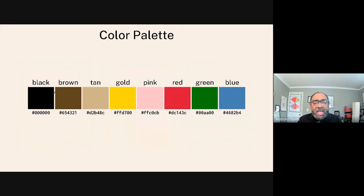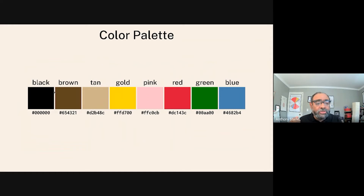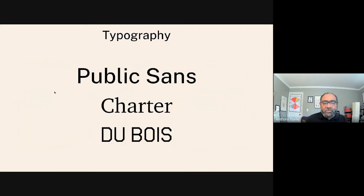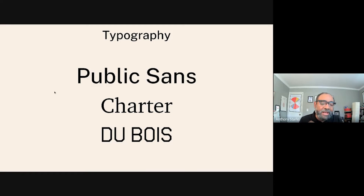In doing the recreations, I found that there was a well-defined color palette. You see the black, the brown, and the tan, which Du Bois used to denote things like skin color. But also the black, the red, and the green, which presaged the Pan-African flag, which was created in 1920. Typography was also interesting. I used Public Sans and Charter. There has also been a typeface called Du Bois created by Trey Seals from VocalType, which aids in recreating the hand lettering seen on the original visualizations.